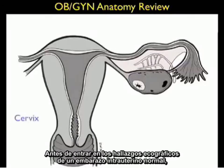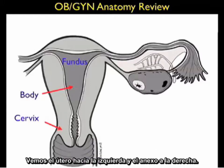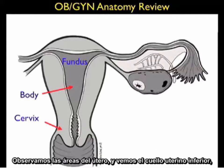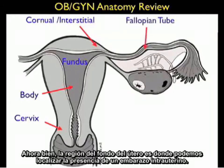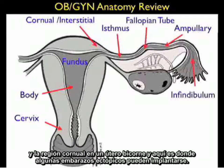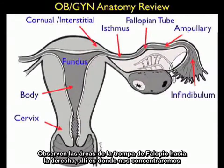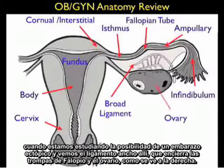Before launching into the sonographic findings of a normal intrauterine pregnancy, let's quickly review the OBGYN anatomy important for this application. We see the uterus to the left and adnexa to the right. Notice the intermediate body and the fundal region towards the top of the uterus — the fundal region is where we define an intrauterine pregnancy to be located. We see the area where the fallopian tube enters the uterus, which is the interstitial region in a normal uterus and the corneal region in a bicornate uterus, where some variants of ectopics can implant. The broad ligament encases the fallopian tube and the ovary as seen to the right.